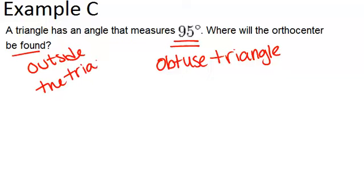So as we saw in example B, if the triangle is acute, the orthocenter is inside. If the triangle is obtuse, the orthocenter is outside.